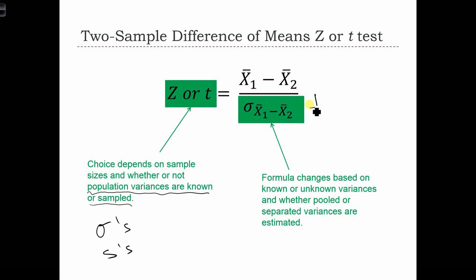The formula for the standard error of the difference of means also changes based on whether or not the variances are known or unknown. So whether or not we're using population known variances, standard deviations, or sample standard deviations, and whether or not we're going to consider the variances to be pooled or separated.